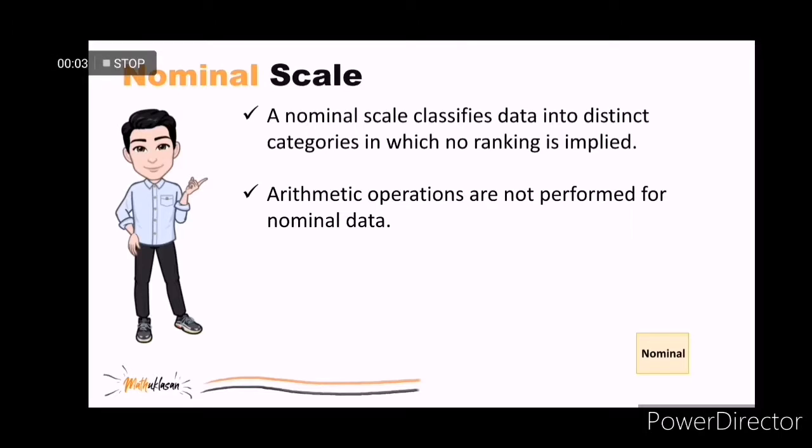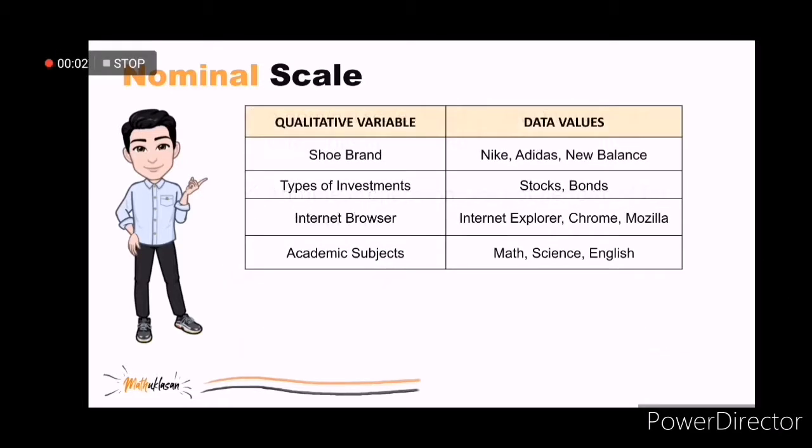First on the list, a nominal scale classifies data into distinct categories in which no ranking is implied. It is said to be the weakest form of measurement because you cannot specify any ranking across the various categories. Also, arithmetic operations are not possible. Here are some examples of nominal scale variables: shoe brand, types of investments, internet browser, and academic subjects.